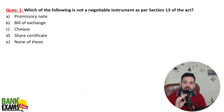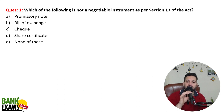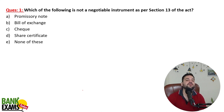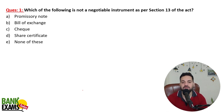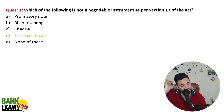Which of the following is not a negotiable instrument as per Section 13? This is not a very important question but still needs to be done. Promissory note, bill of exchange, and cheques are negotiable instruments. A share certificate is not a negotiable instrument at all.